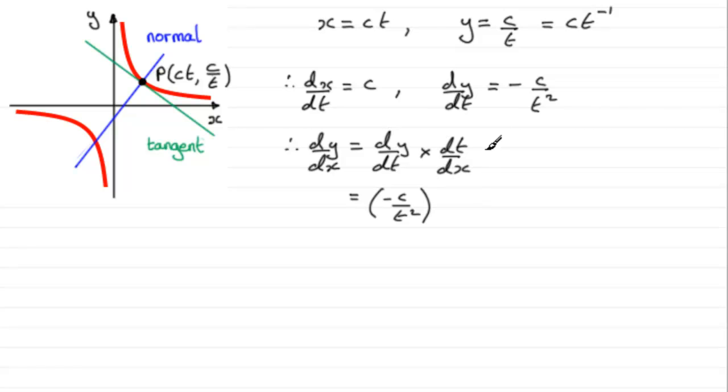And if we multiply this by dt by dx, we've just got to reciprocate this. So that's going to be multiplied by 1 over c. Clean this up, and what you have is minus 1 over t squared. So that's our general gradient at any point P on this curve.